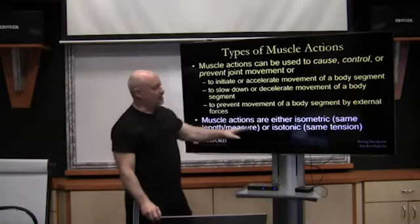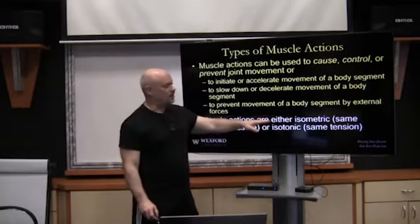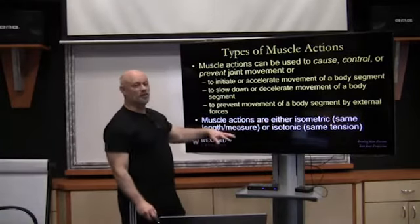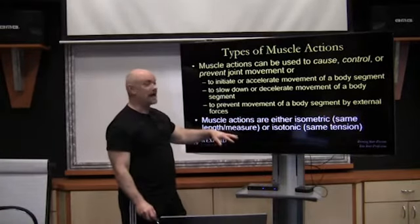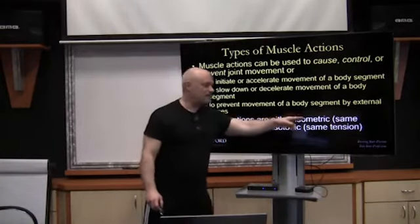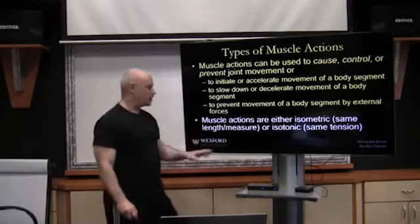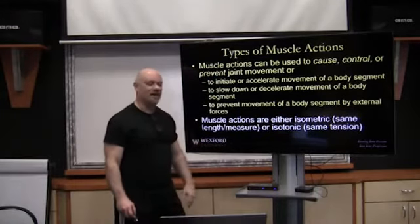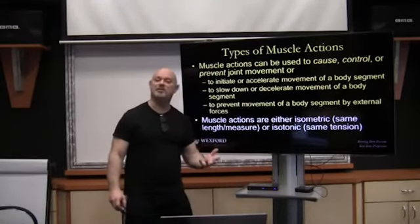Muscle action is either what they call isometric — same length or measure — or isotonic, which means same tension. We're going to explain that a little bit more because that's kind of a contradiction in terms, and we're going to get to that to tell you exactly what that is.